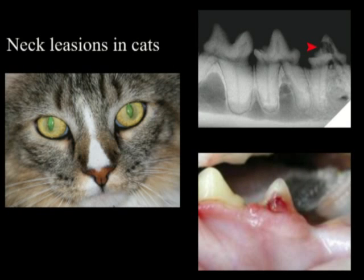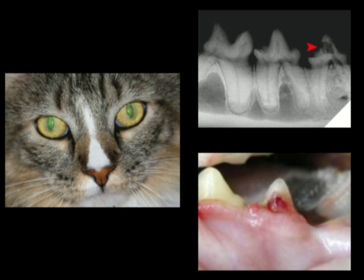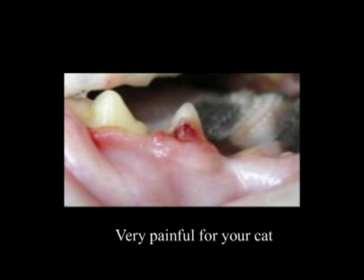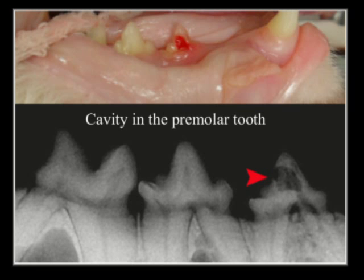Our feline friends have what we call neck lesions. Look for fleshy growths covering the base of the teeth. These are very, very painful for our pets. The digital x-ray shows that the enamel is breached and the pulp with the nerves are open to the air and infection.